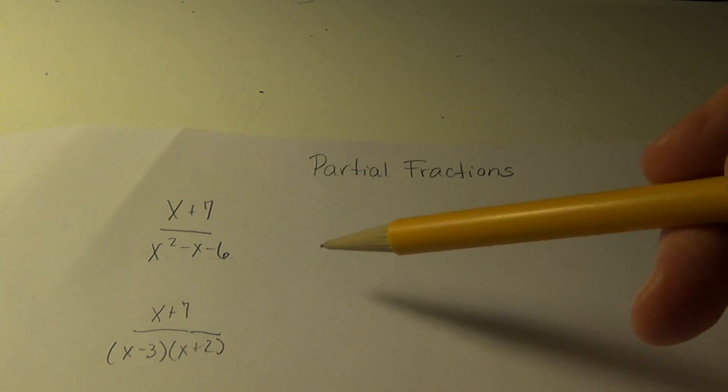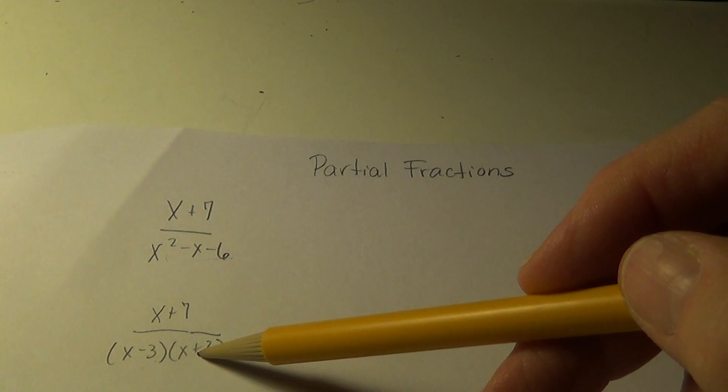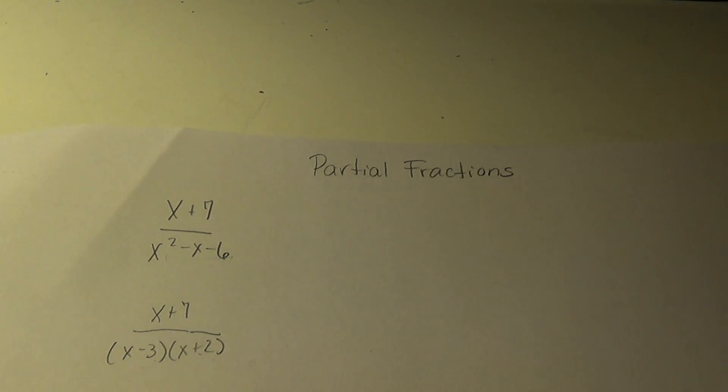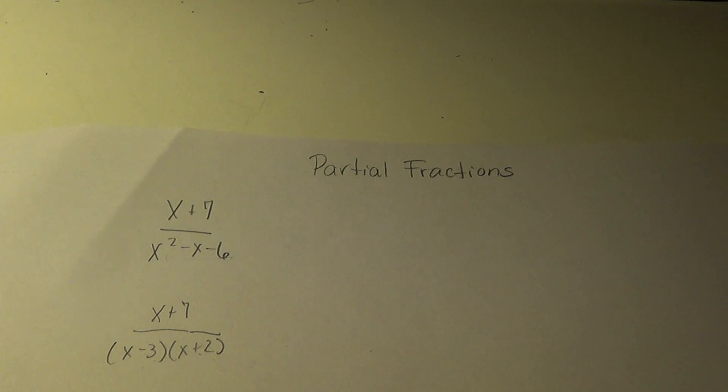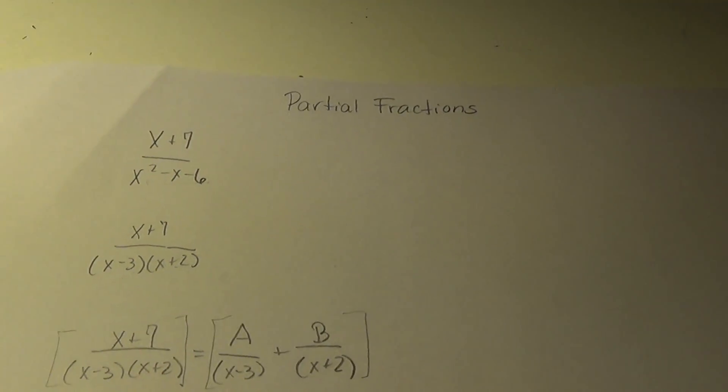Now I'm going to set this up so that each of these factors appears in a denominator once and they are added together underneath two unknowns. Say what? Here it is. Here we go.